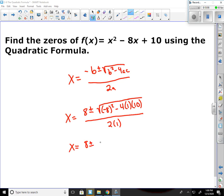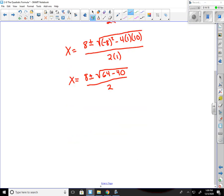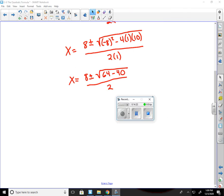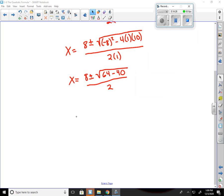Start solving this. 8 plus or minus the square root. Negative 8 squared is 64. 4 times 1 times 10 is 40. So 64 minus 40 over 2. So it gives us x equals 8 plus or minus root 24 over 2. That's 4 and 6. 4 is a perfect square. Square root of 4 is 2, so 2 comes out in front.